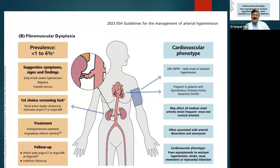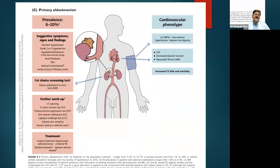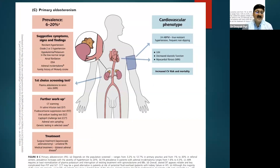Primary aldosteronism has a prevalence of 6 to 20%. The patient may have resistant grade 2 or grade 3 hypertension, hypokalemia, and atrial fibrillation. Diagnosis requires plasma aldosterone levels; CT angiography, IV saline infusion test, captopril challenge test, or oral sodium loading test may also be required. Treatment may include surgical intervention and adequate blood pressure control.